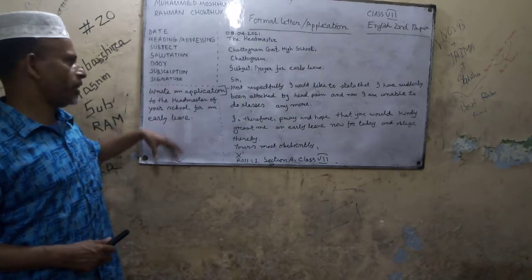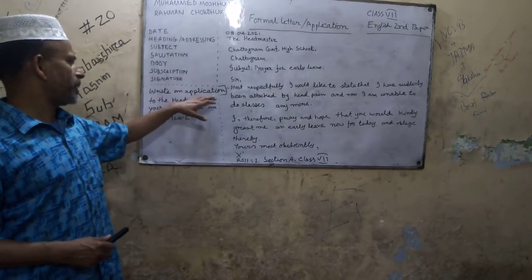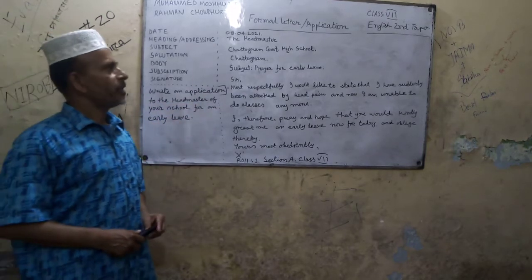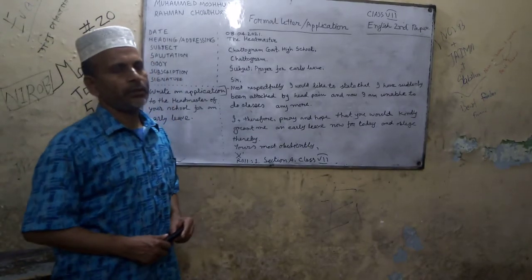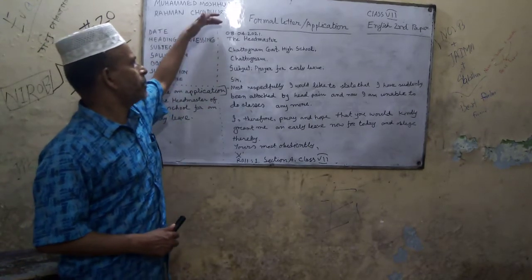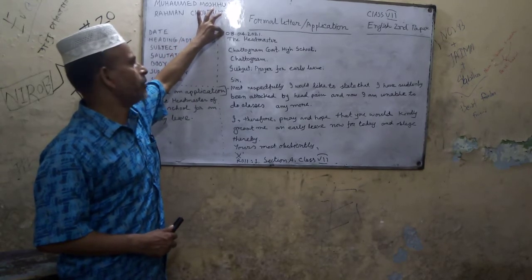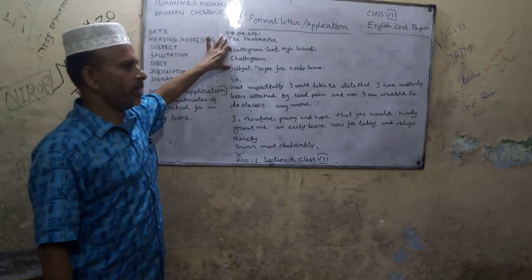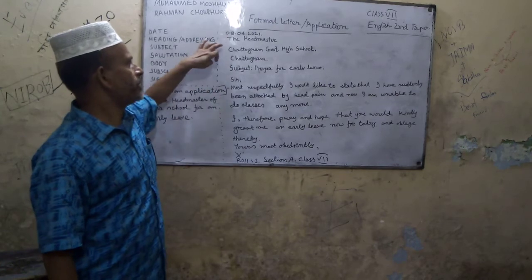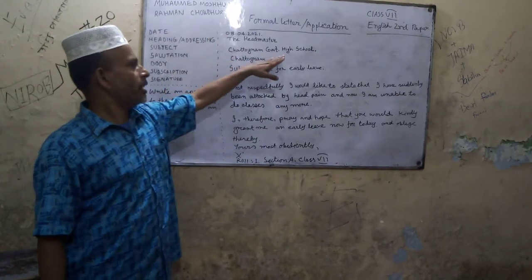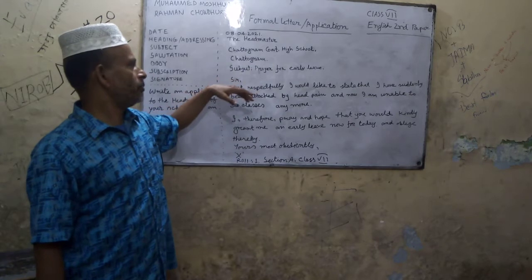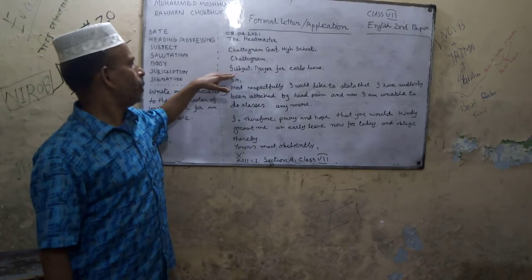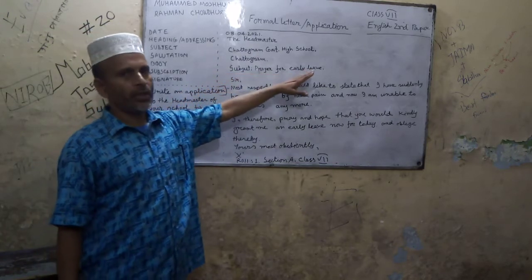Now we are with the problem. It is a new syllabus. This problem is an application that must be understood. First, we look at the date — it is the author of the letter. Then the heading and addressing: the application format is addressed to the Headmaster of the government organization, Chattagram. Then the next step is the subject.